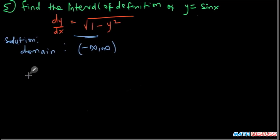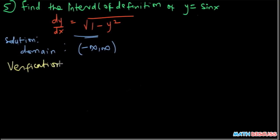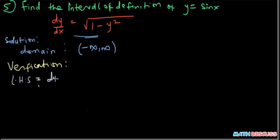What we need to do first is to verify that y equals sine x is actually a solution of the differential equation. The left-hand side is y prime, and if y equals sine x, then y prime is going to be cosine of x.